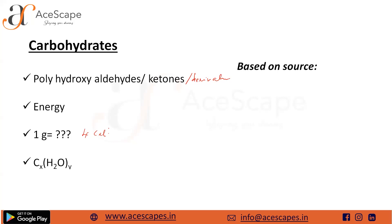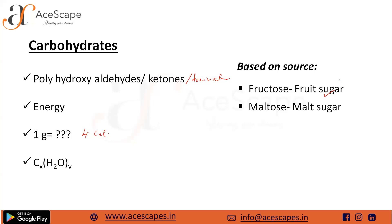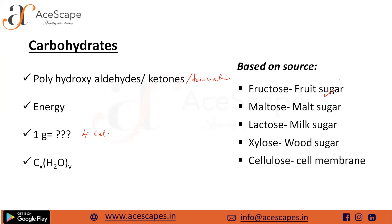Based on the source of origin, carbohydrates can be classified as fructose, maltose, lactose, cytose, and cellulose. Fructose is our fruit sugar, maltose is our malt sugar, lactose is our milk sugar, cytose is food sugar, and cellulose is the sugar component present in the cell membrane.